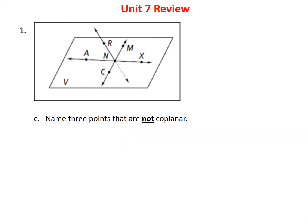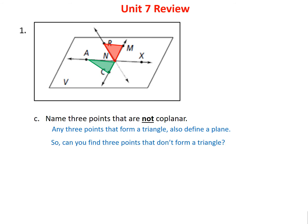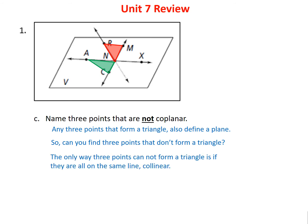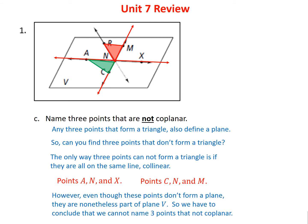Problem 1C is actually kind of tricky. It says name three points that are not co-planar. Normally, any three points that form a triangle also define a plane. The only way three points cannot form a triangle is if they're on the same line. However, even collinear points like A, N, and X still lie in plane V. So it's actually impossible to find three points that are not co-planar.